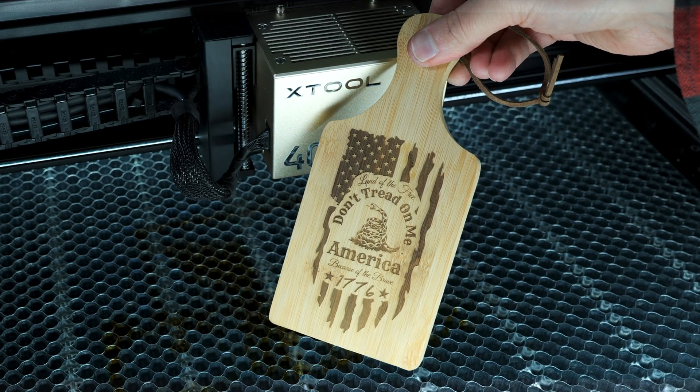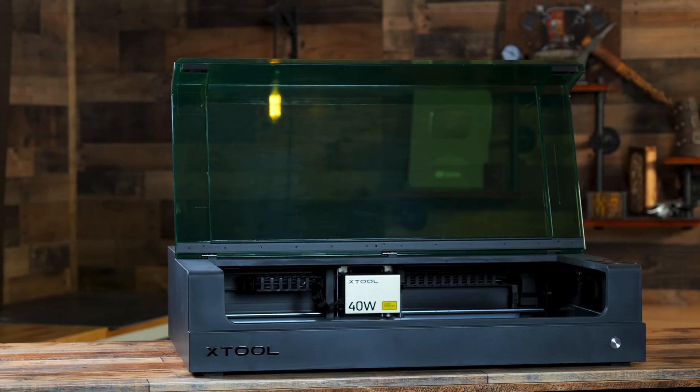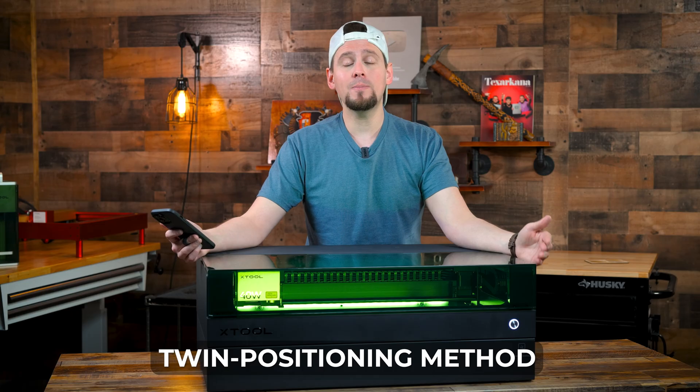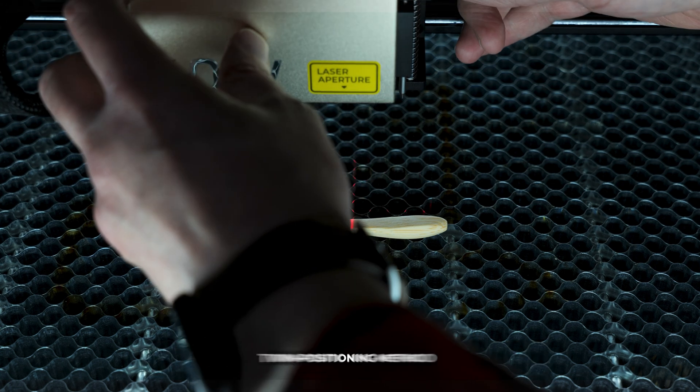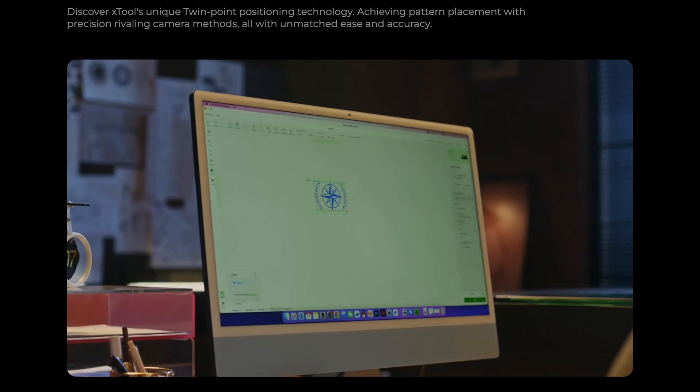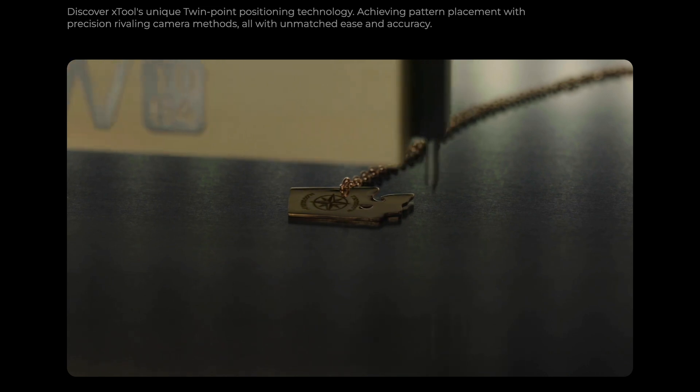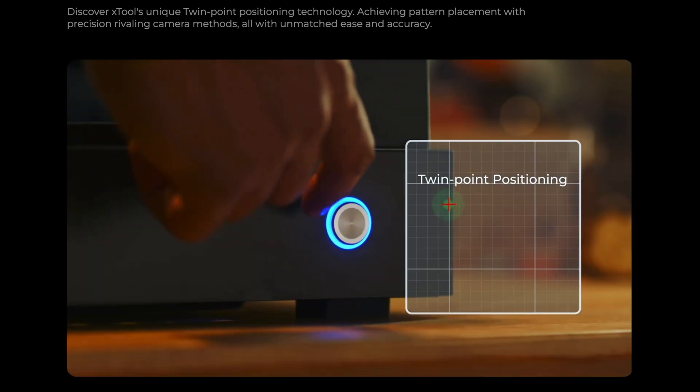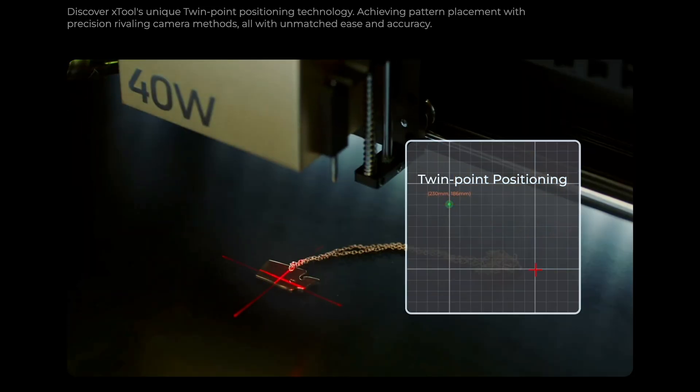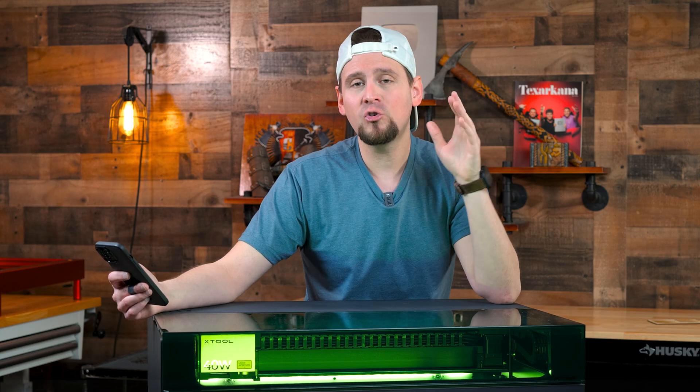In that video, there is a feature that I rushed through that the S1 has, and that is the new twin positioning method. So in this video, I want to give you a short tutorial and show you how this works. Now Xtool says it's more accurate than a camera when it comes to lining up your image to be engraved, and I would say I think they may be right. Check out this short tutorial.